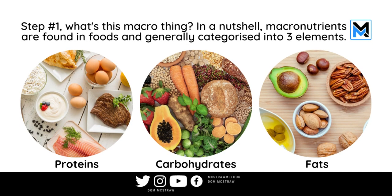Step one — let's go through some basics. What's this macro thing? Well, in a nutshell, macronutrients are the stuff in your food generally categorized into three elements. You've got your proteins, typically from sources like meat, dairy, eggs, etc. You've got your carbohydrates — commonly called carbs — coming from vegetables, fruits, breads, pastas, as you can see in the pic.